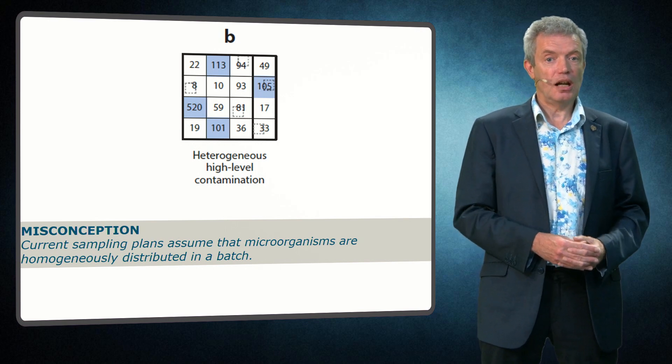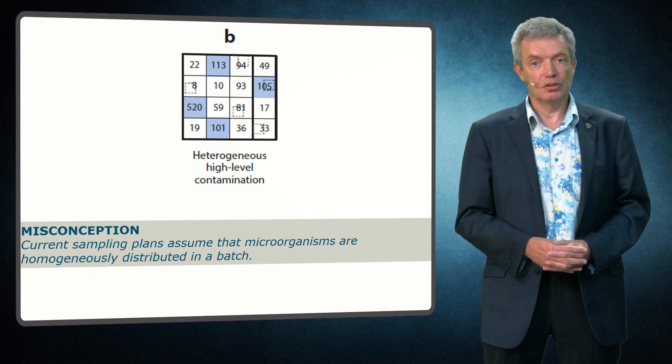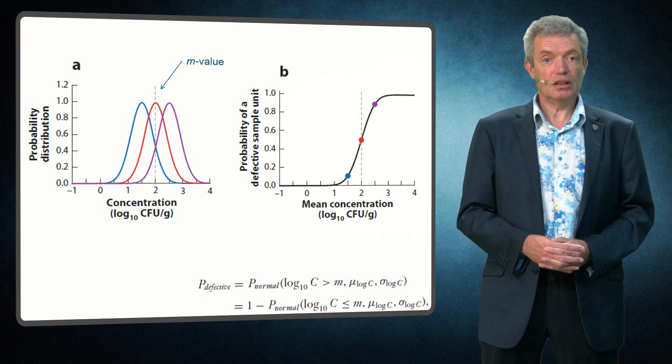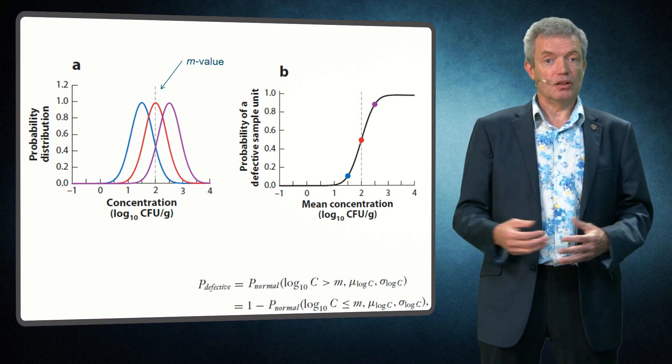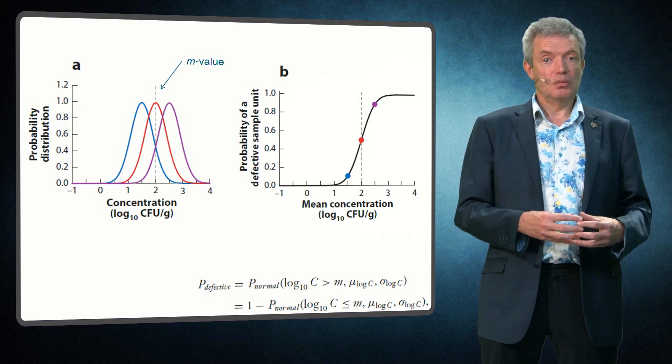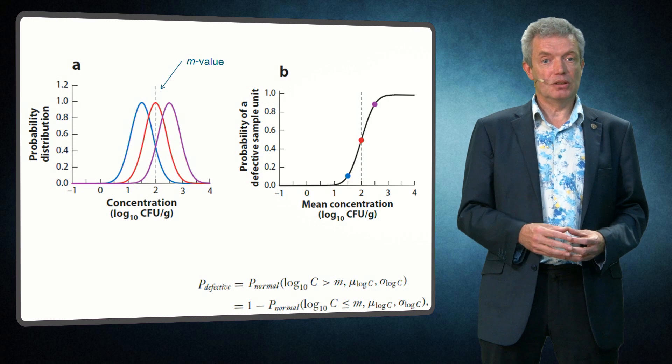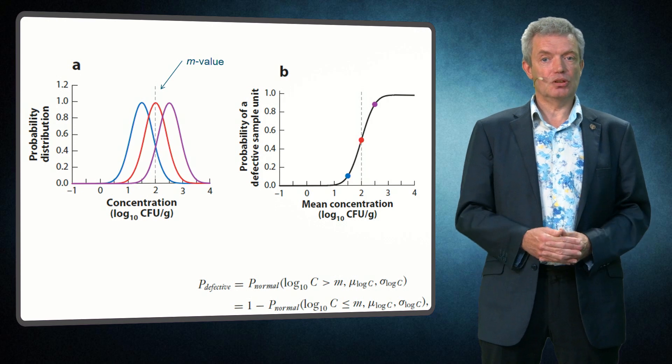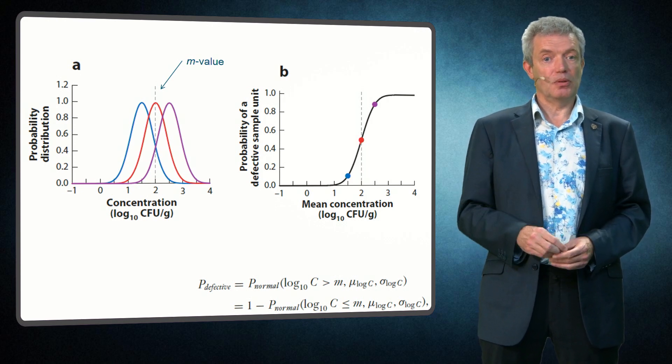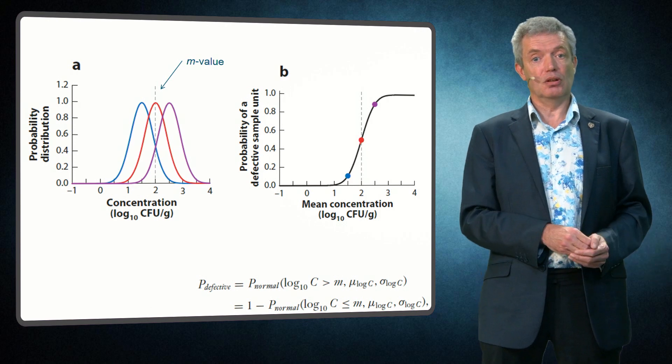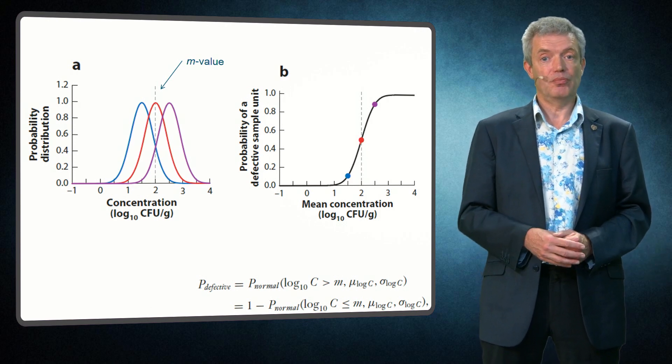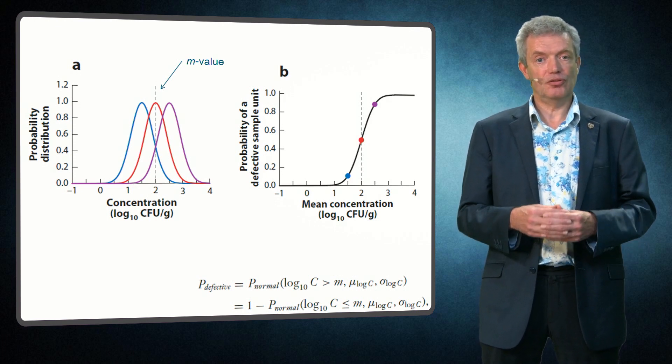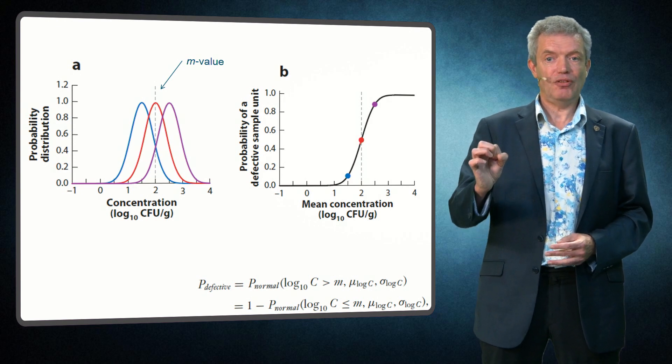Let's look at this now for a heterogeneous high-level contamination that can be quantified or counted. If we have a distribution of microorganisms in a batch of food, and we have a probability distribution of concentration, look for example here at the red curve, that has a certain mean log spread and we also have a microbiological limit, and that is now exactly in the middle of the red curve, at two logs. Think for example about Listeria monocytogenes. If you would take one sample from that red curve, you would have 50% probability that it would be below the limit and 50% probability that it would be above. And therefore, in the right curve of the probability of a defective sample unit for a mean log concentration of 2 for the red curve, we place a point at 50%.